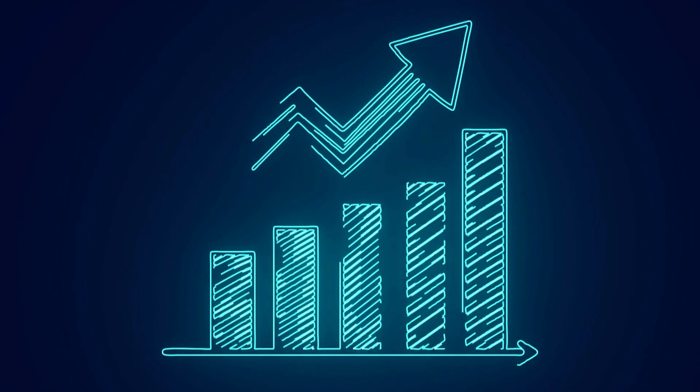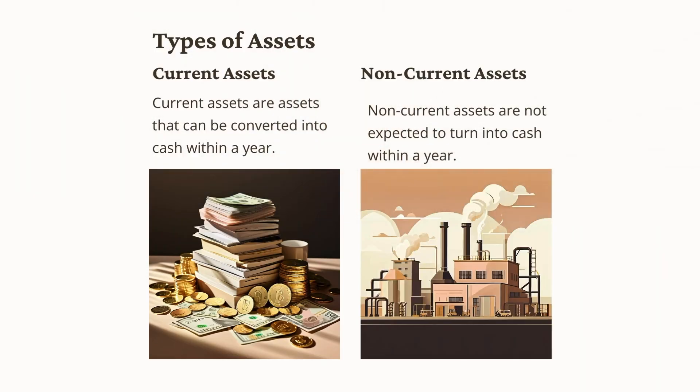Assets can be classified into several types based on their nature and the duration for which they are held. In accounting, we refer to this duration as the asset's liquidity. We classify assets as either current or non-current based on their liquidity — meaning how quickly they can be converted into cash.